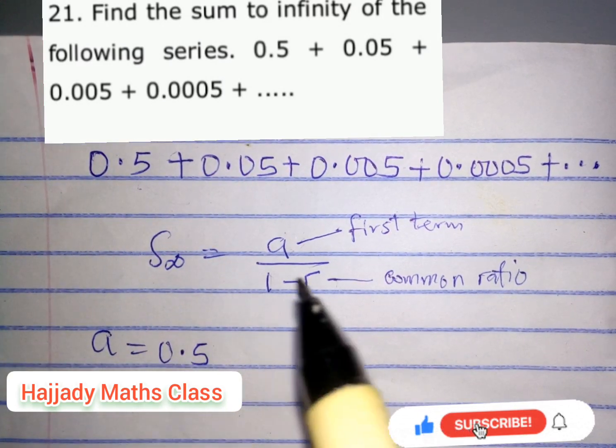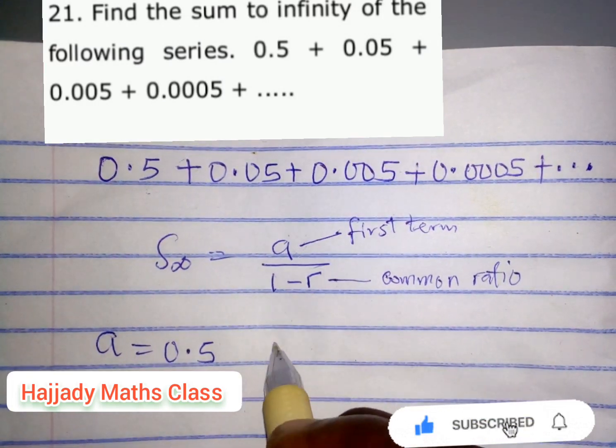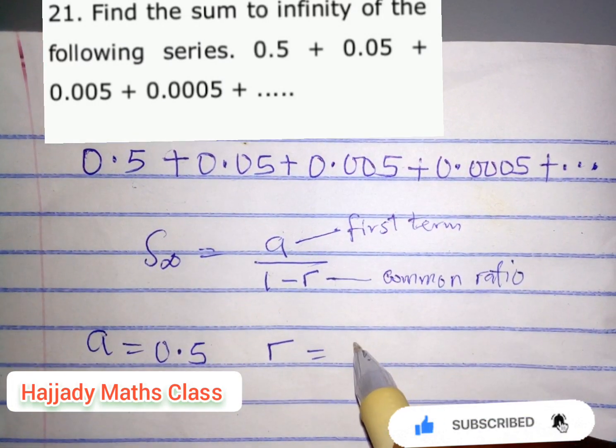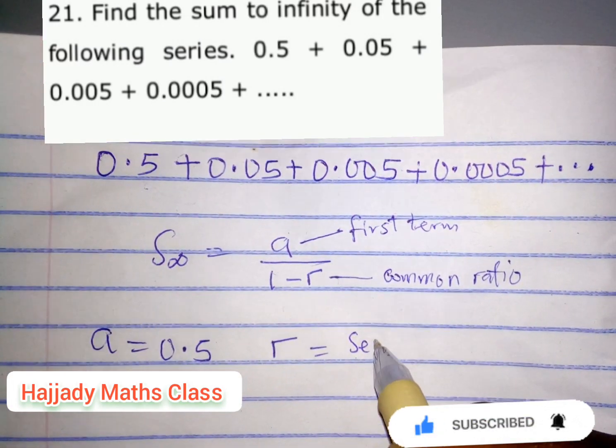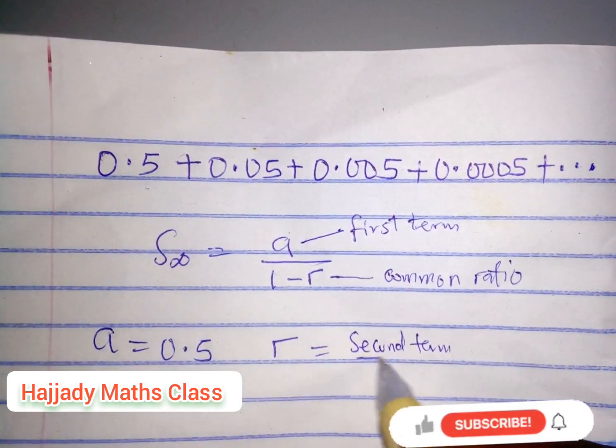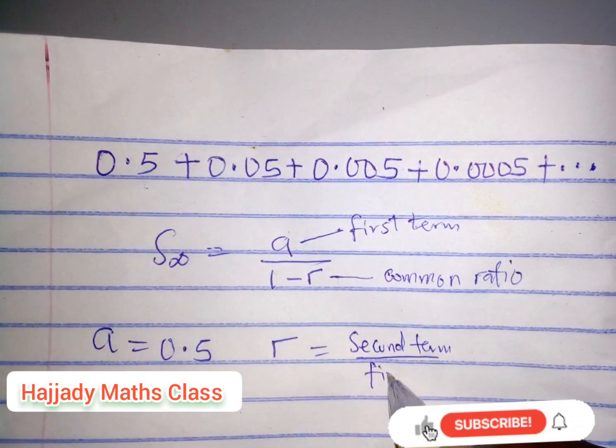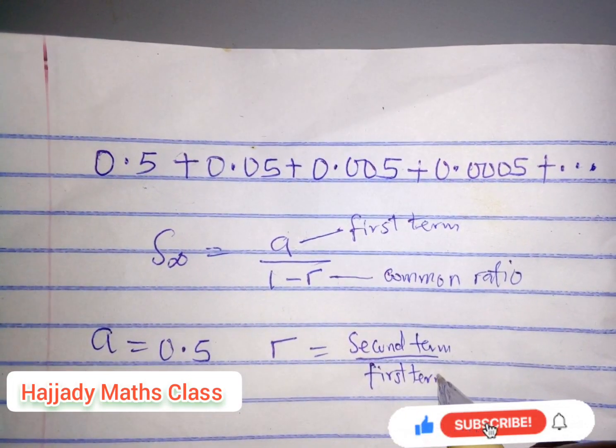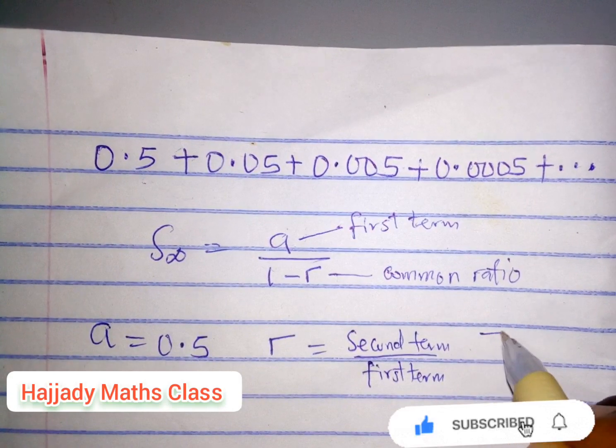Now, knowing the common ratio: the formula for common ratio means the second term over the first term. Using the formula, I can write Tn over Tn minus 1, that is the present term divided by the previous term.